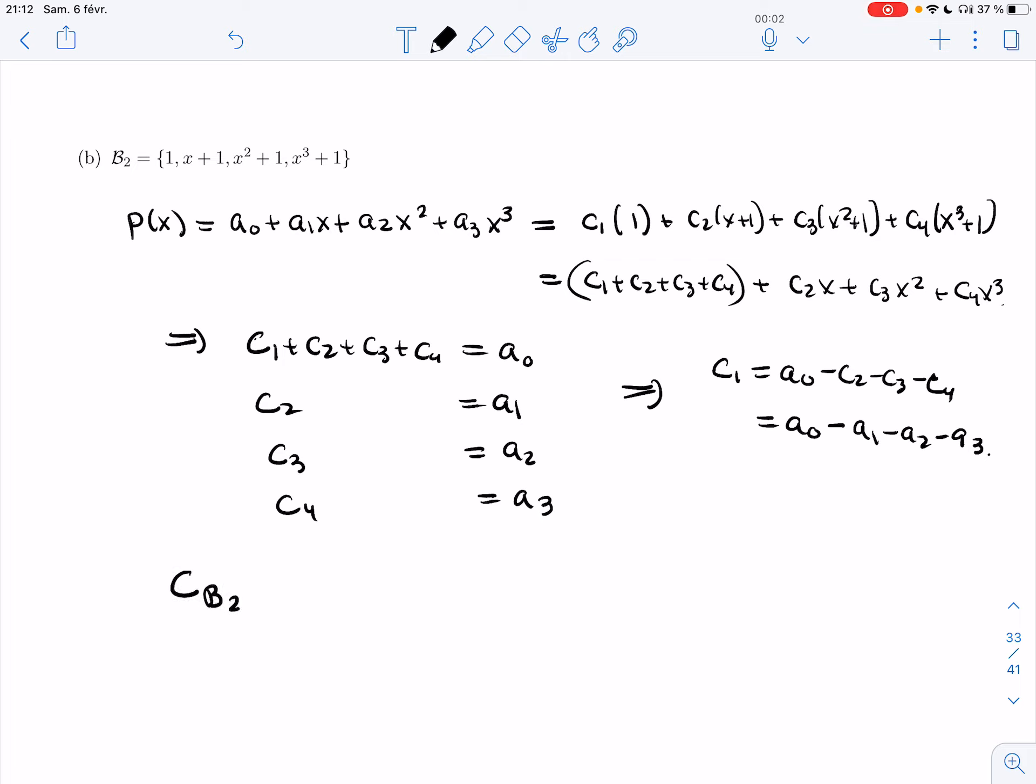So the coordinate basis vector, coordinate vector, coordinate map for a₀ + a₁x + a₂x² + a₃x³. That's going to give you C₁, C₂, C₃ by definition.